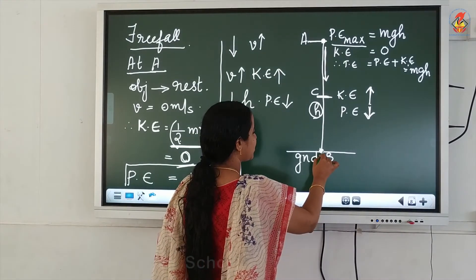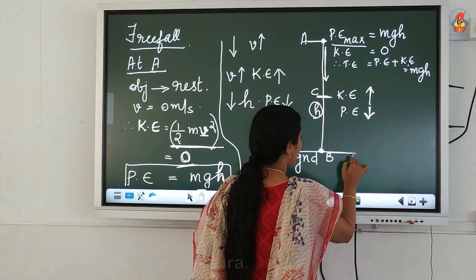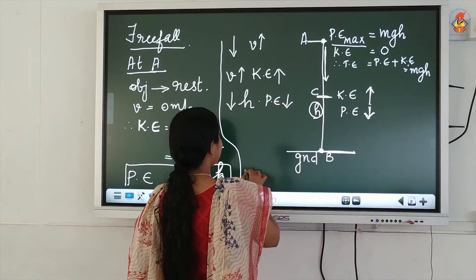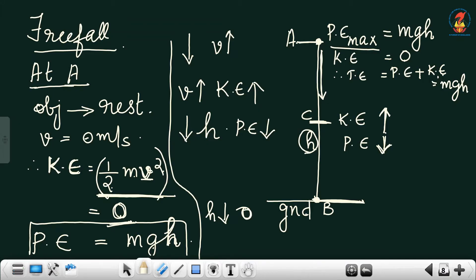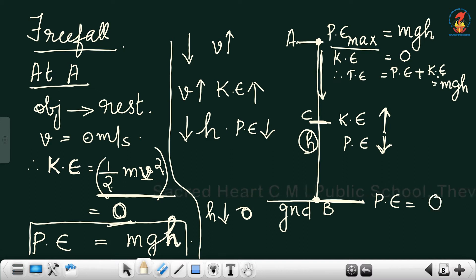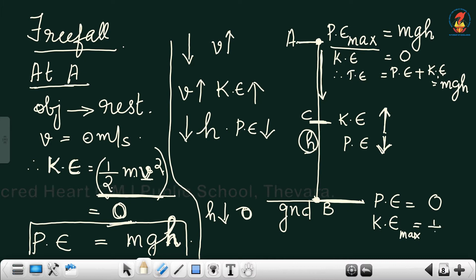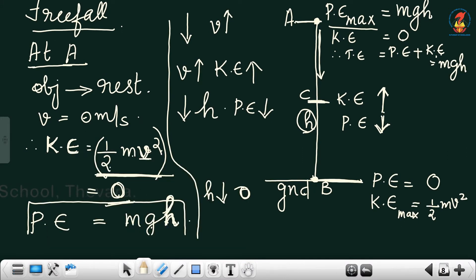Consider the object on reaching point B at the ground. The height has reduced to 0, so the potential energy is also 0. On reaching the ground, the velocity is maximum, so kinetic energy is maximum and equal to ½mv². Therefore, total energy equals kinetic energy plus potential energy, which is ½mv² plus 0, equal to ½mv².